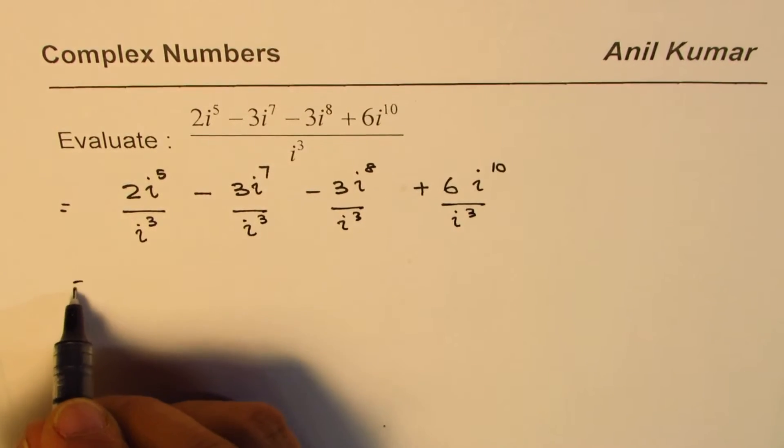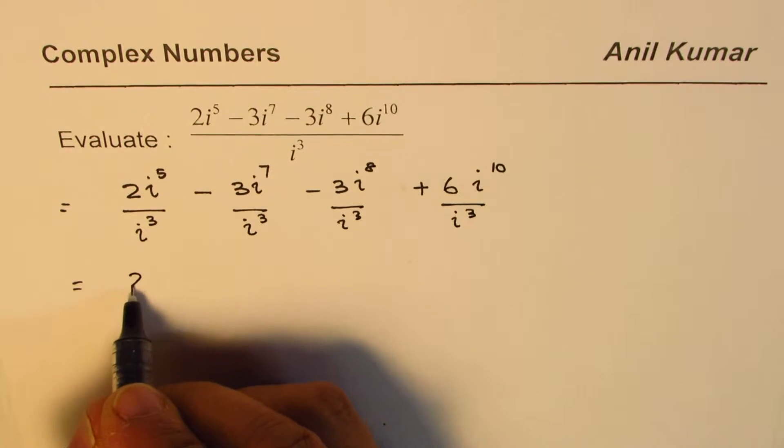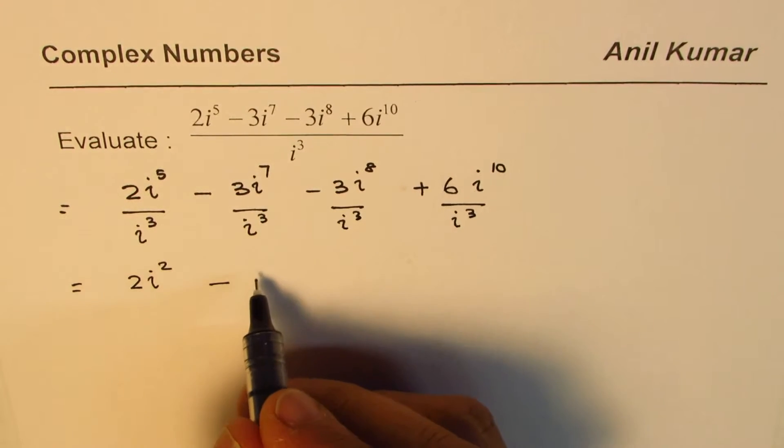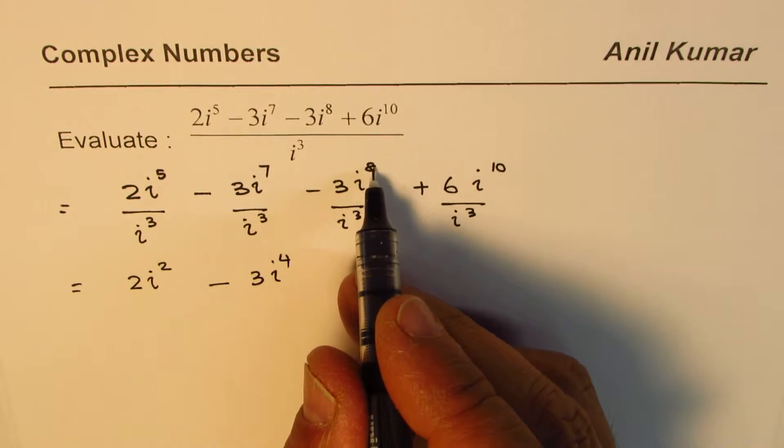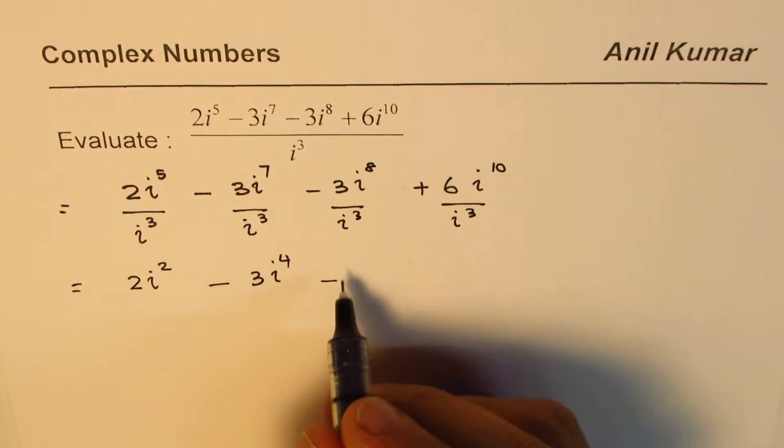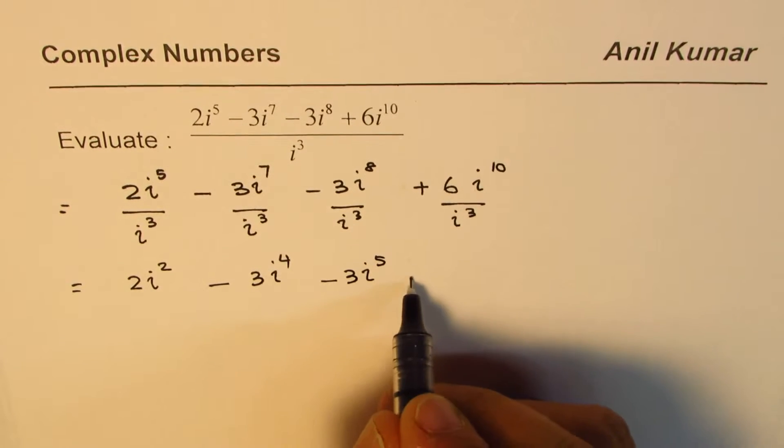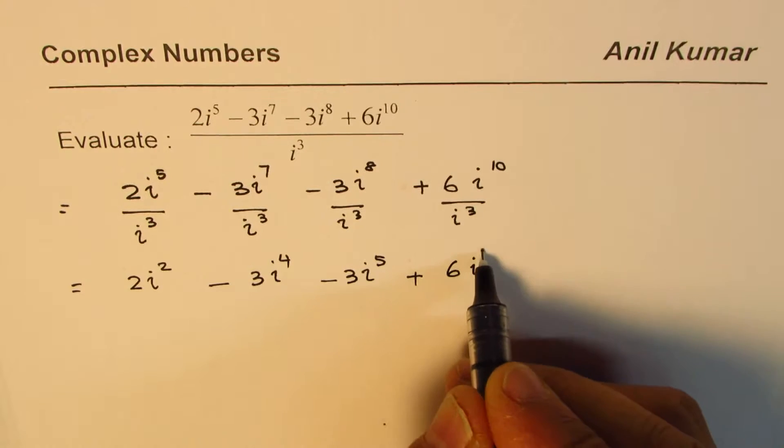Okay, now we can simplify. 5 minus 3 is 2, so we get 2i^2. Here, 7 minus 3 is 4, so we get 3i^4. 8 minus 3 is 5, so we get -3i^5. Plus 10 minus 3 is 7, so we get 6i^7.